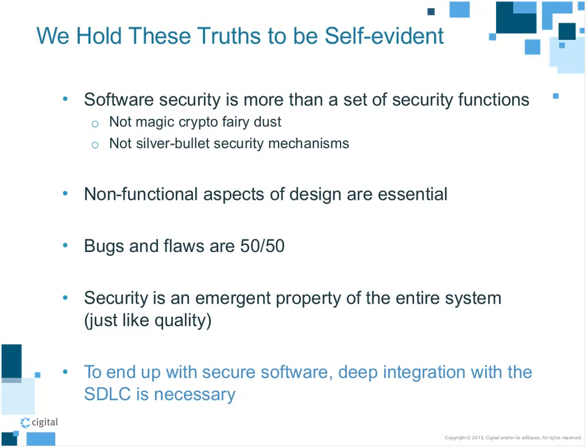Bugs and flaws are 50-50, and this is something that CIGITAL has seen over the years stay pretty constant. A bug is essentially a mistake in the code — an error that leads to a security vulnerability. When we talk about flaws, we're talking about the design of the system — a design choice that led to an issue. Code review and penetration testing identify bugs, while design reviews and architecture analysis look for flaws. The B-SIM framework covers activities that identify both, because each one is about half of the software security problem.